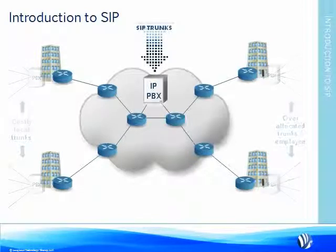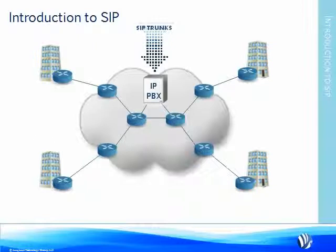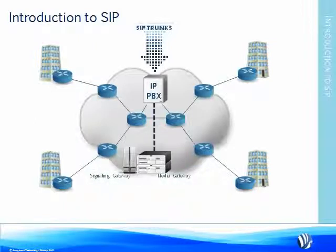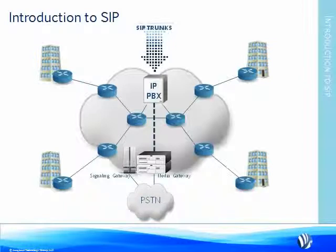Now let's see what happens to the network when we add virtual SIP trunking. SIP trunks are brought into a central switch in the cloud, eliminating the need for local loop T1 or PRI circuits. You retain all of your local DIDs and PBX extensions, and calls are routed over IP to gateways across over 8,000 rate centers nationally, which, through a SIP to SS7 signaling gateway, deliver local calls to the public switch telephone network.